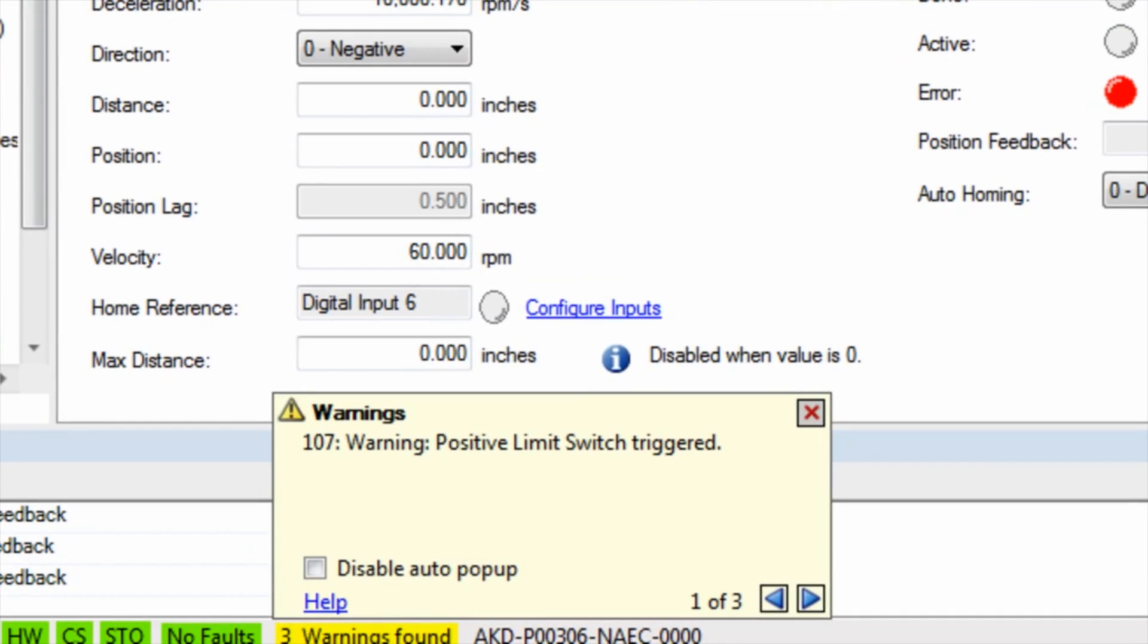If during the home sequence both the negative and positive end of travel limits are encountered, a fault will occur, indicating that the home reference was never found.